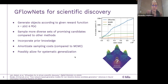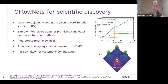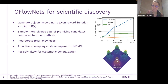GFlowNet also possibly allows for systematic generalization, which means that if there is some underlying structure in the reward function — for example, we have four modes which are structured in some way — during training, just because this algorithm is based on neural networks, it is possible that it can generalize and find another mode which it hasn't seen during training.